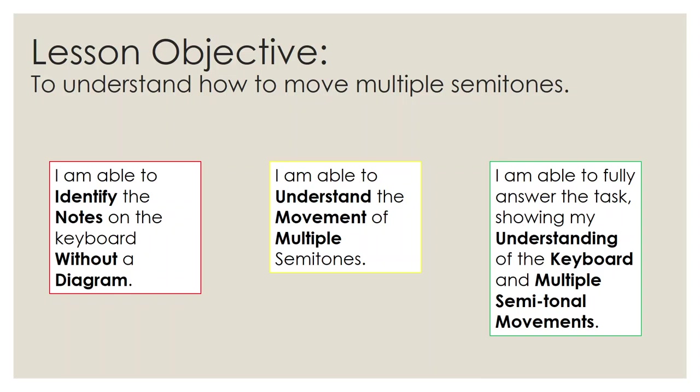We know where C is — it's to the left of the two black keys — so we can work out what all of the other notes are. Once you've done that, we move to the yellow box in the middle: I'm able to understand the movement of multiple semitones. I want to show a proper understanding of it and really get to understand what it means. Once you're able to do that, the green box on the right: I am able to fully answer the task, showing my understanding of the keyboard and multiple semitonal movement, including where notes are and how you can move multiple semitones.